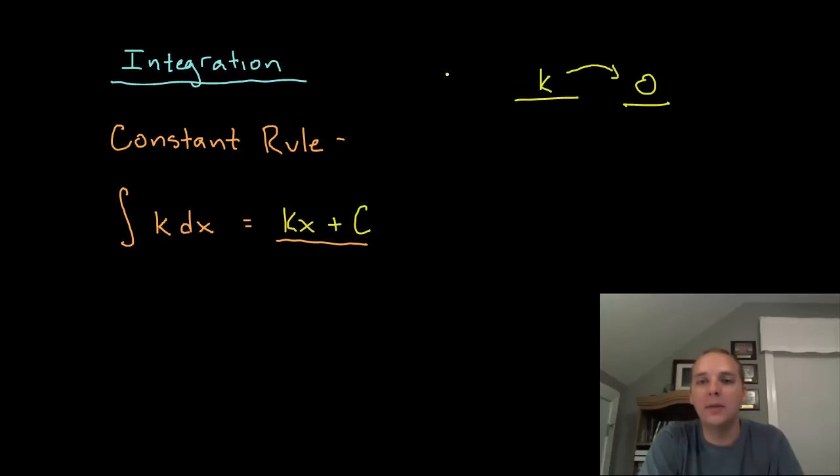But if you asked what function, if you took its derivative, would give you a constant, well then it would have to be basically like y equals mx plus b.